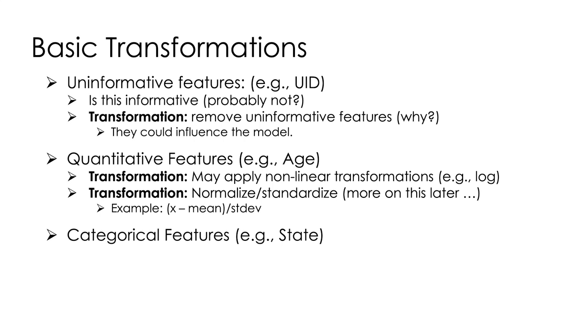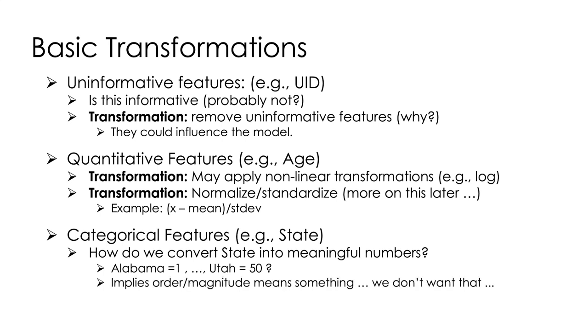Categorical features are a little more tricky. It's things like state. So how should we convert state into a meaningful number? A simple solution might be to assign a number to each state. Alabama is 1, maybe Utah is 50. This approach has some downsides. It implies an ordering between these states, and that as you get to a higher state in the alphabet, that's more of a particular value for that state. So we need a better way to encode these.